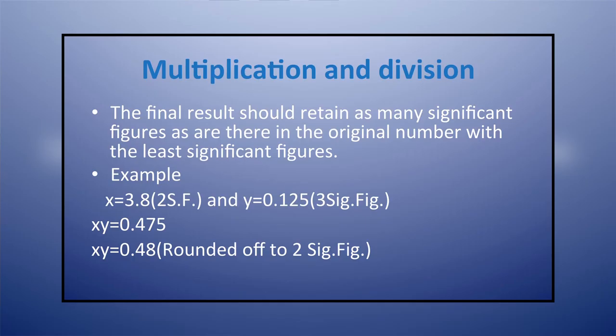If we multiply x and y the result is 0.475, but as we have to retain the least number of significant figures, we round off the last digit. When making calculations which contain constants, we also have to take care of significant figures.